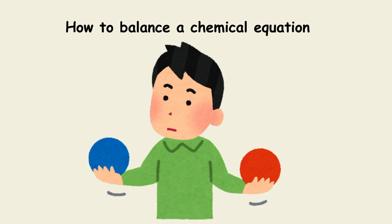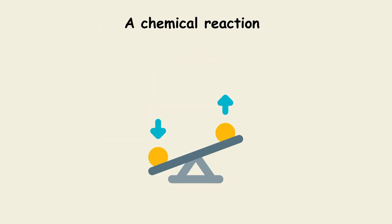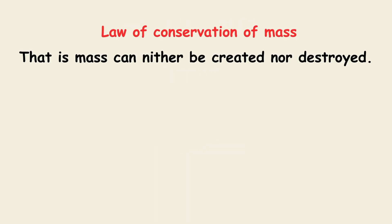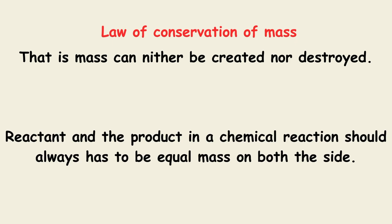Next, we are going to learn how to balance a chemical equation or a chemical reaction. A chemical reaction should always be balanced on both sides. As we all know the law of conservation of mass — mass can never be created nor destroyed. Hence, the reactants and the products in a chemical reaction should always have equal mass on both sides. So the next step after writing a chemical reaction is how to balance it.